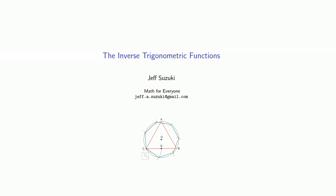Given an angle, we can find — using a calculator, table, random guesses, or drawing a picture — the values of sine, cosine, and tangent, as well as the values of secant, cosecant, and cotangent.